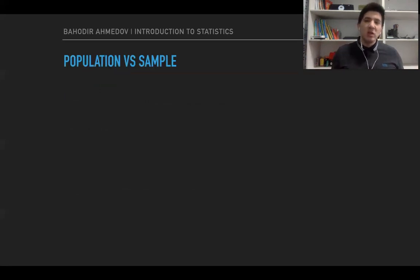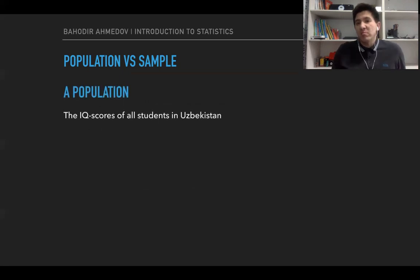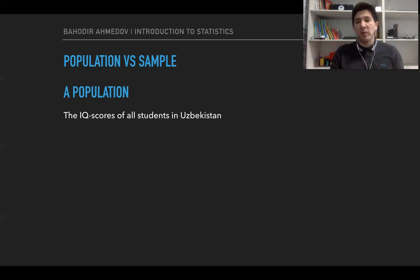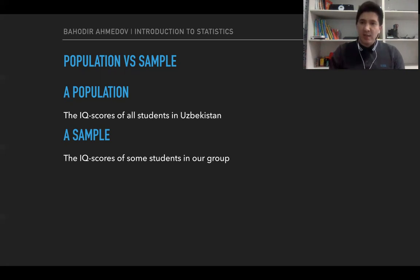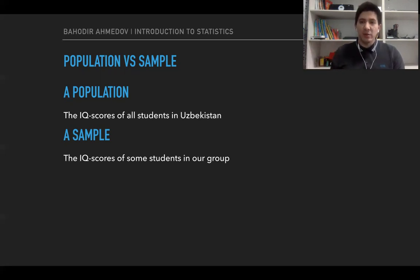For example, all the students of Uzbekistan could be the population, and we would like to measure the IQ scores of all those students. However, testing all students in Uzbekistan is infeasible, so we can choose a small group and by testing the IQ scores of that small group make conclusions about all the students in Uzbekistan. The main question is how to create those small groups.